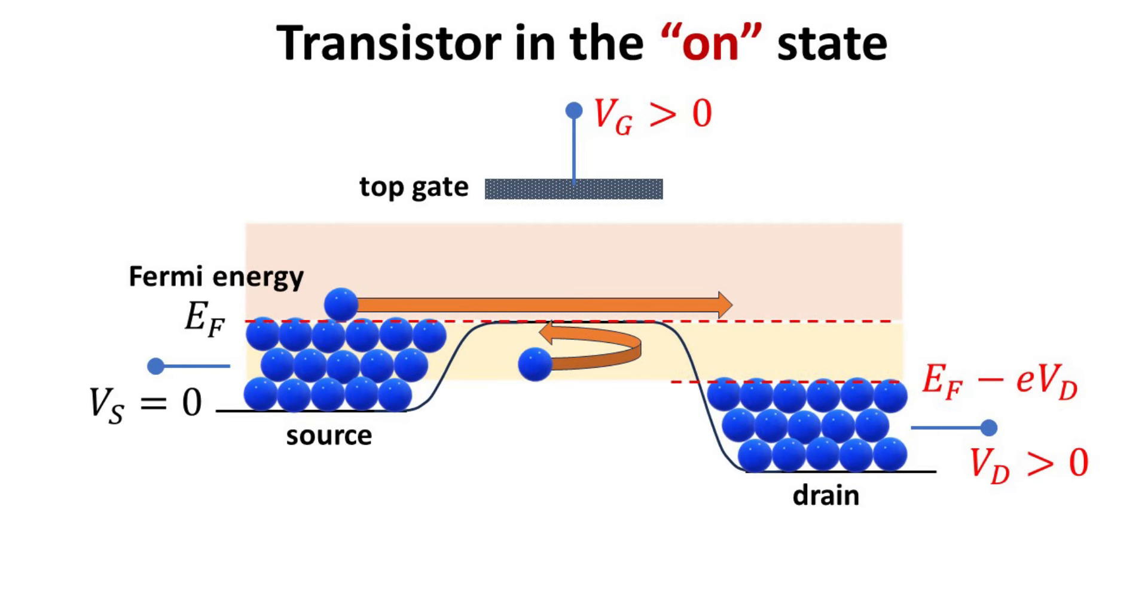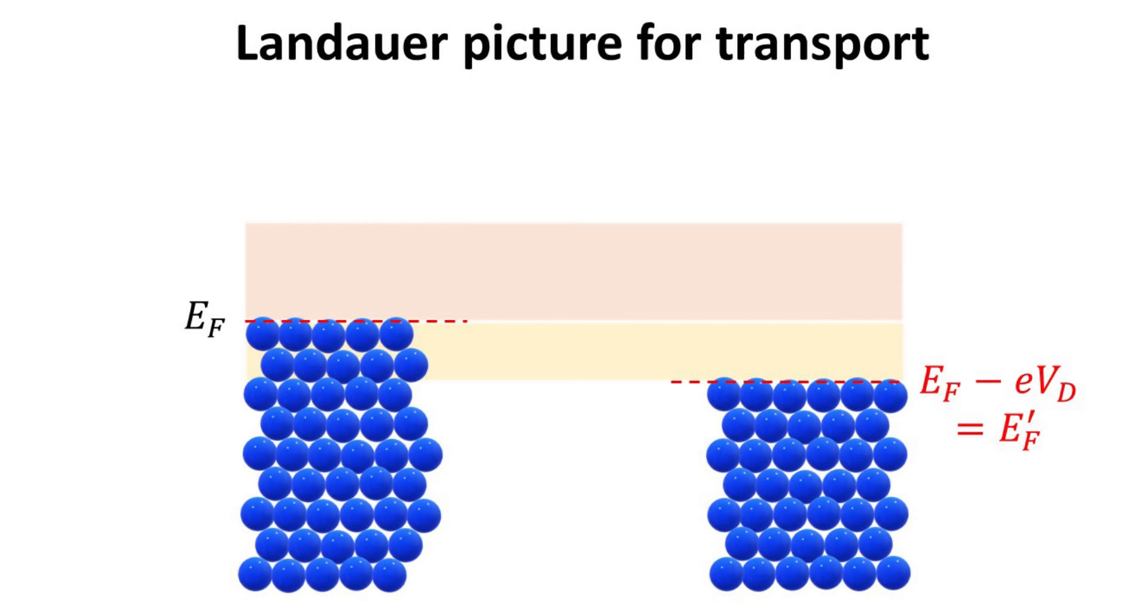We turn on the transistor by applying the gate voltage to lower the channel barrier. Now, electrons can transmit unimpeded across the channel, leading to exponentially larger current compared to the off-state. The Landauer picture is a transport theory from the point of view of the contacts.